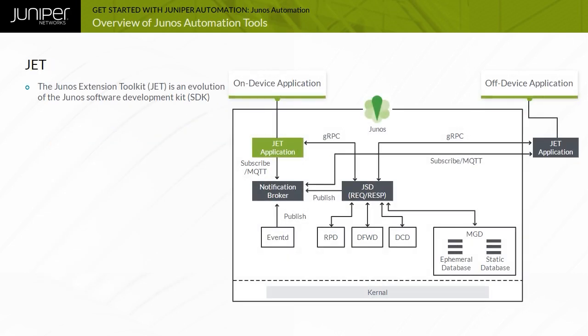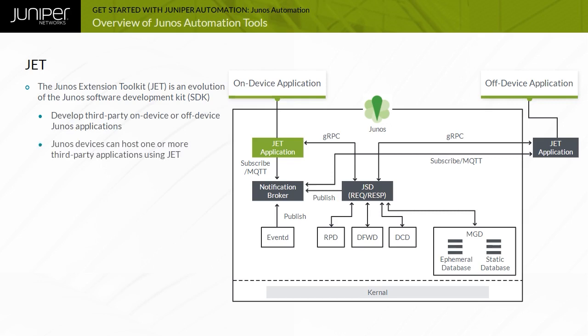The Junos Extension Toolkit or JET is an evolution of the Junos Software Development Kit or SDK that provides a modern and programmatic interface for developers of third-party Junos applications. Using JET, Junos devices can host one or more third-party applications such as monitoring tools, on-box Puppet and Chef agents, a Git client, or even a Twitter client that generates tweets when triggered by specific device events. JET contains tools that aid in programming the Junos control plane. The Junos control plane has always been programmable, but JET makes it easier and faster.